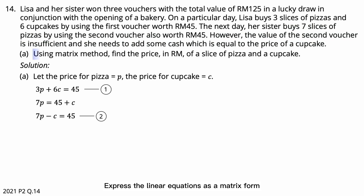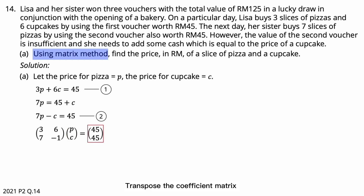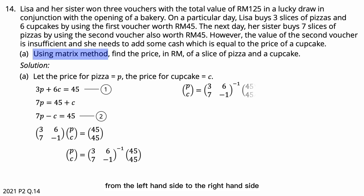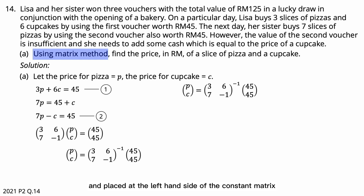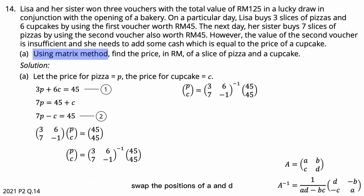Express the linear equations in matrix form: the coefficient matrix, the variable matrix, and the constant matrix. Transpose the coefficient matrix to become an inverse matrix on the left-hand side of the constant matrix. For a matrix A with elements A, B, C, D — to find the inverse, swap positions of A and D, put negatives in front of B and C, and divide everything by the determinant AD minus BC.